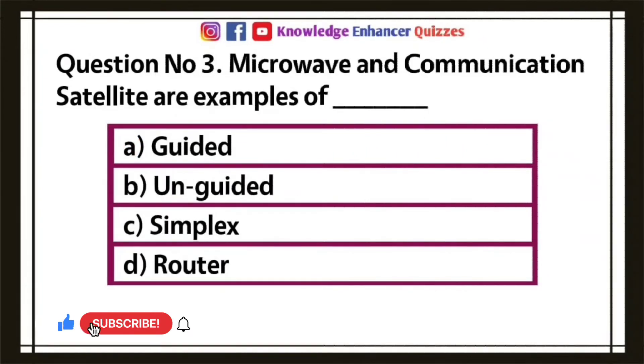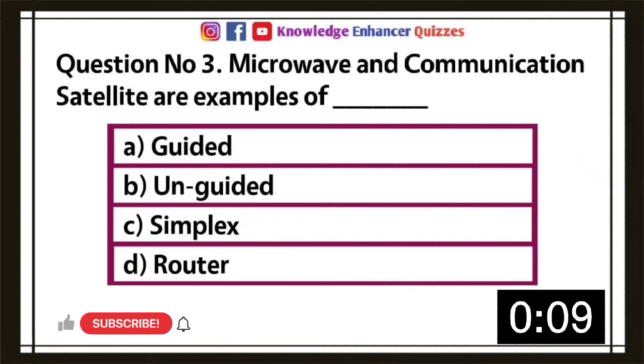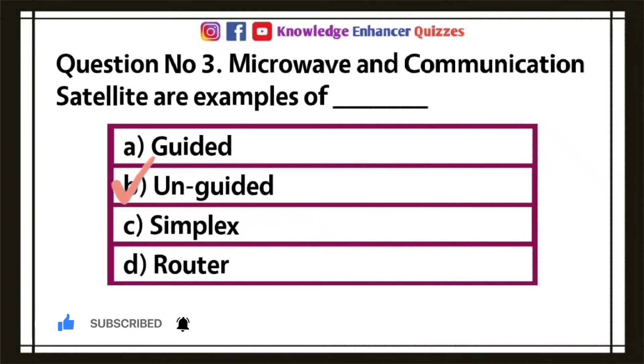Question number three, microwave and communication satellite are examples of: A, guided; B, unguided; C, simplex; D, router. Option B is the right answer.